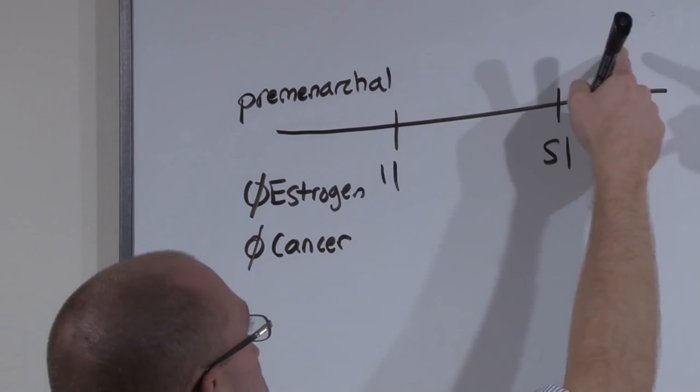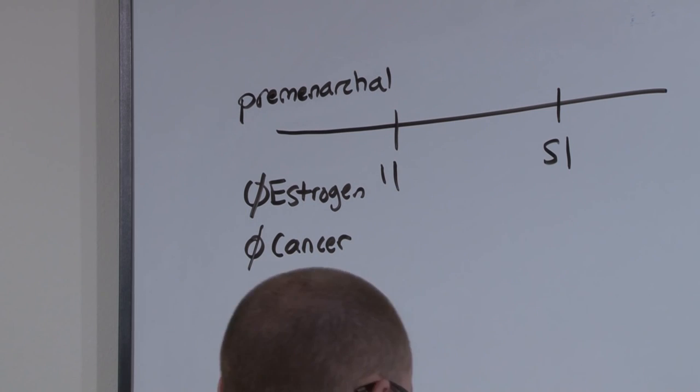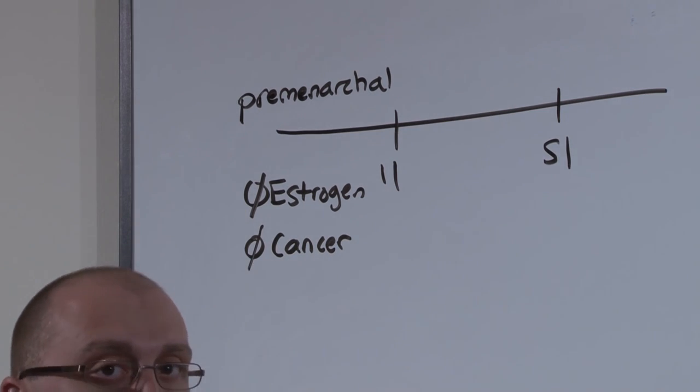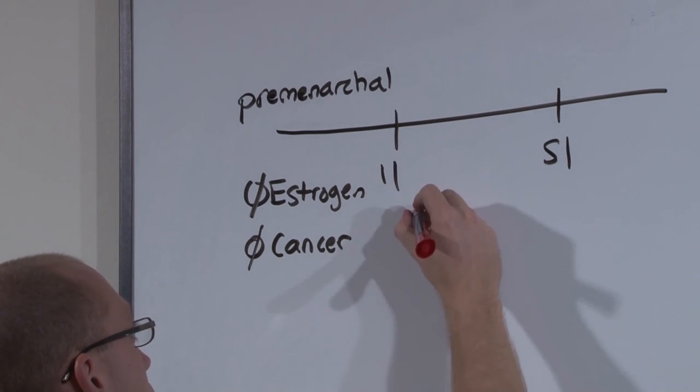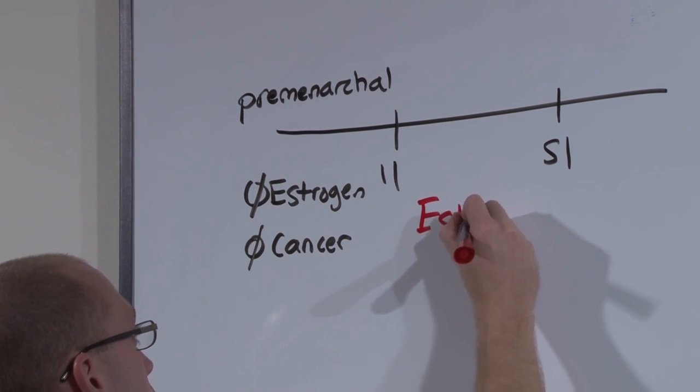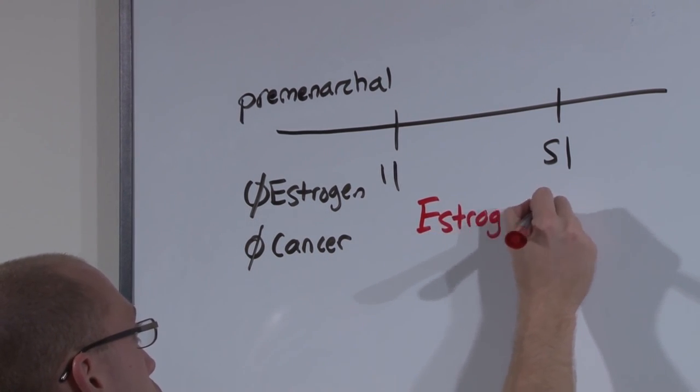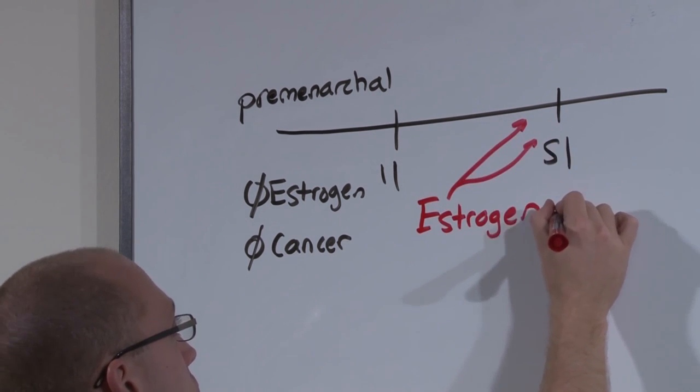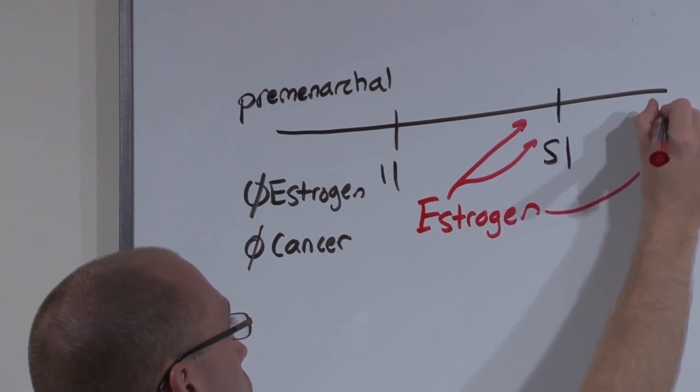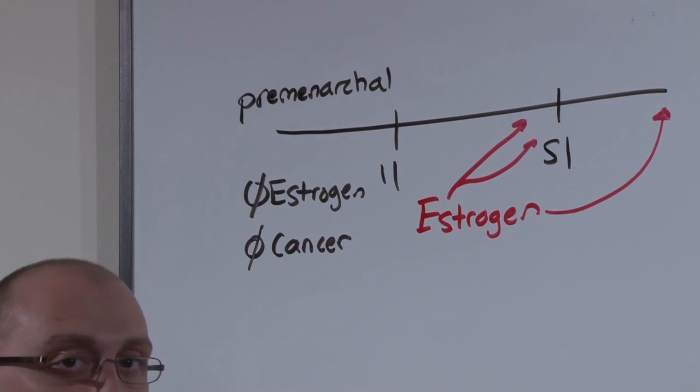But in the reproductive and postmenopausal age, the woman has begun to experience exposure to estrogen. Because after the onset of menses, every cycle estrogen is produced. Over time, there's a cumulative effect such that the older you are, the more estrogen you have been exposed to.